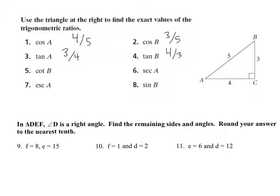Cotangent is the reciprocal of tangent, so if tangent is opposite over adjacent, then cotangent is adjacent over opposite — this is three fourths. Secant is the reciprocal of cosine, so if cosine is adjacent over hypotenuse, then secant is hypotenuse over adjacent, which is five over adjacent. Cosecant of A is the reciprocal of sine of A; sine of A is three fifths, so cosecant is five thirds. Sine of B is four fifths.